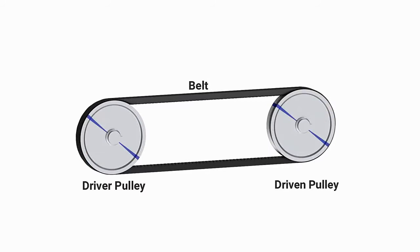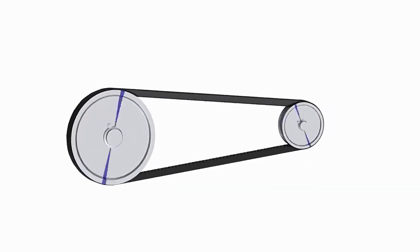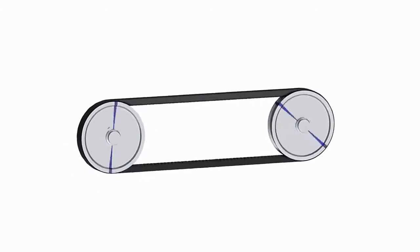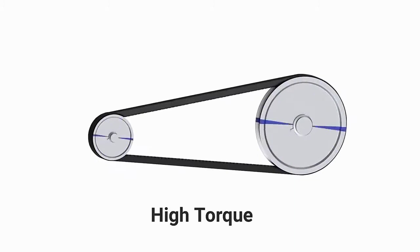High RPM is obtained by increasing the diameter of the driver pulley and decreasing the diameter of the driven pulley. High torque is obtained by doing the opposite. This system allows us to achieve an infinite number of drive ratios between minimum and maximum points.